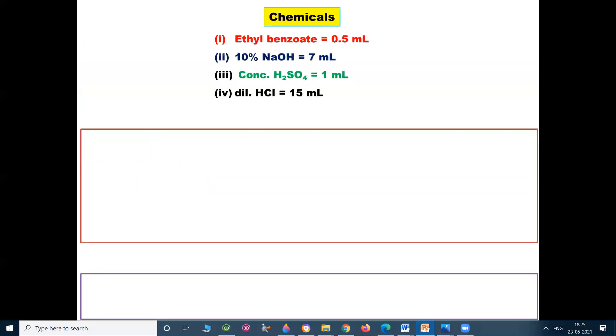For this experiment, the following chemicals are required: ethyl benzoate 0.5 ml, 10% NaOH 7 ml, concentrated H2SO4 1 ml, dilute HCl 15 ml.